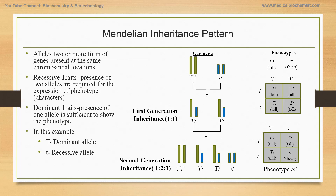Mendelian inheritance is based on the discovery made by Mendel, who proposed and showed through experiments that genes are responsible for the inheritance of certain characters, and that these genes are inherited in a specific manner. He did all these experiments in peas. I'm showing you one of the examples — not exactly Mendel's, but just to show the generalized form of how it works.